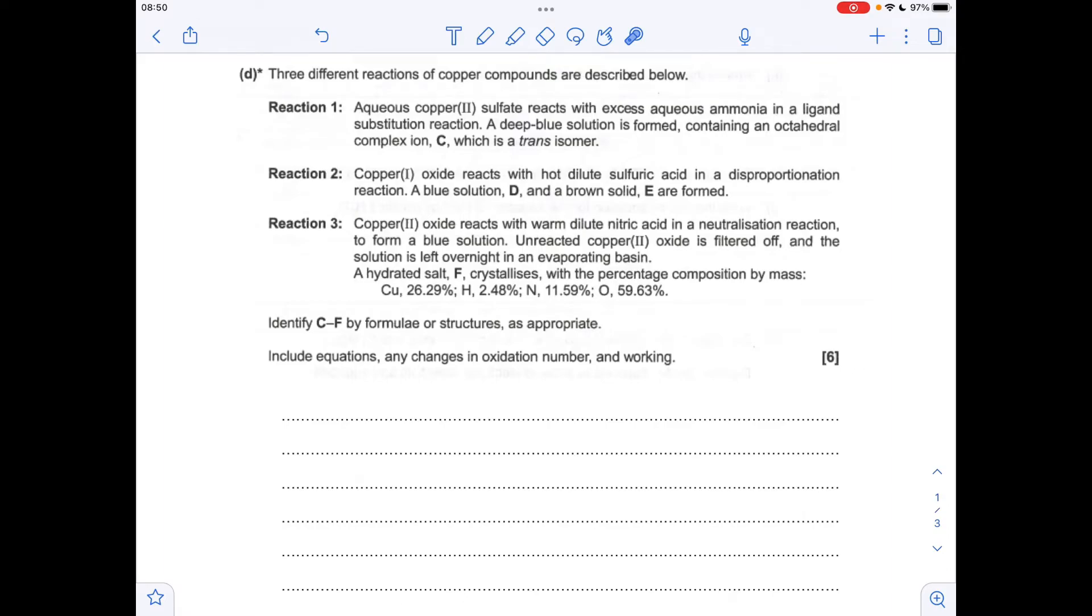Start with reaction one. It's this complex ion of copper that actually reacts with the ammonia, so a ligand substitution reaction that forms this deep blue solution. We need to take four of the H2O ligands out and replace with four NH3 ligands, but it's got to be in the trans configuration.